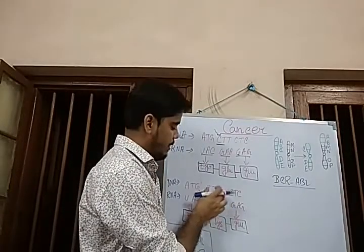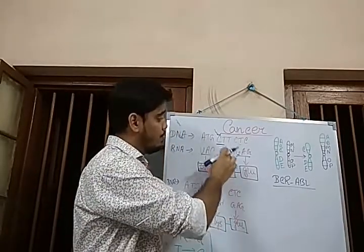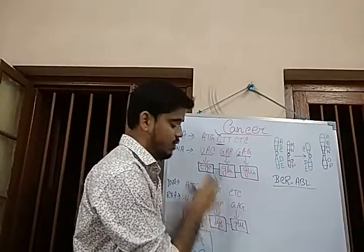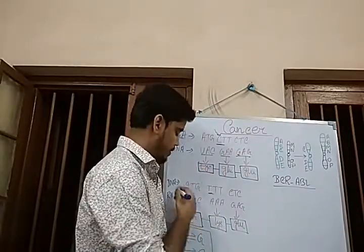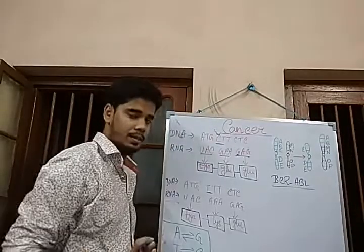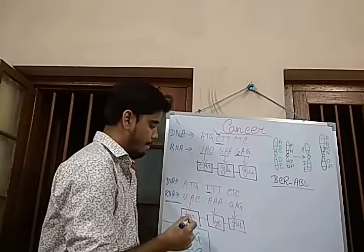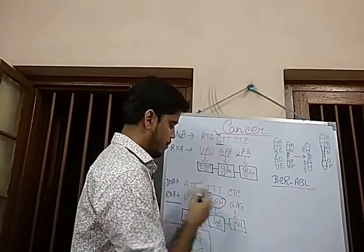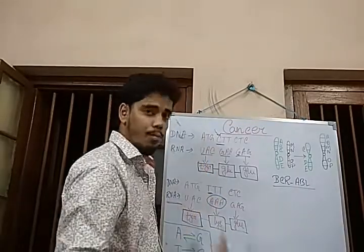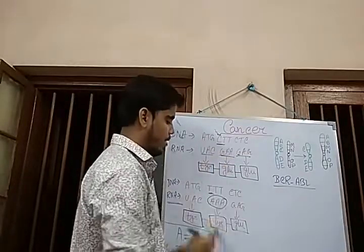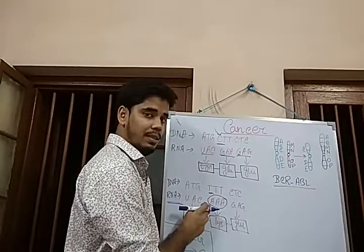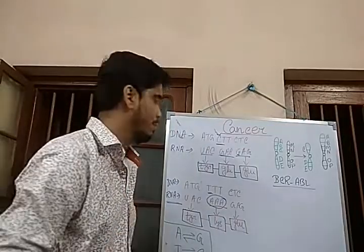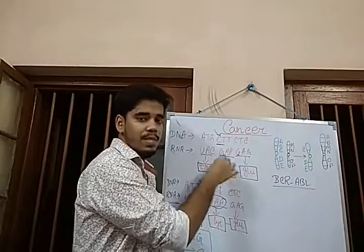Now, due to mutation, the triplet CTT is converted into TTT. After transcription we get an mRNA. Due to this mutation, in the normal case the mRNA triplet is GAA. We know that a triplet codes for a specific amino acid.